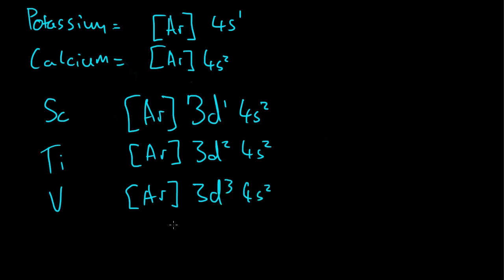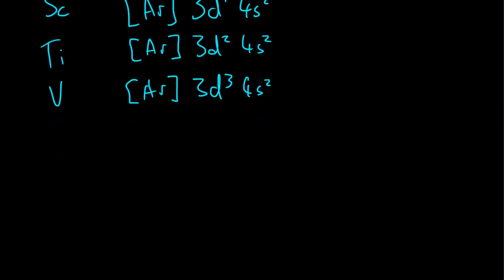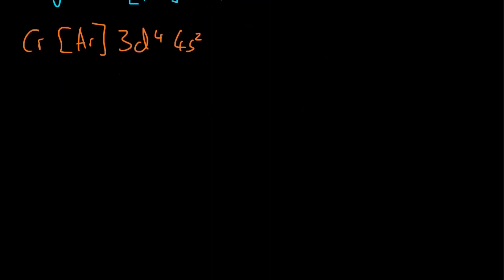Now, when it comes to the next element, chromium, you'd expect to have chromium Ar 3d4 4s2. You'd expect that, because we've added another electron to the 3d orbital. But something kind of awesome happens here. Let's just use an analogy to describe what's happening. At the moment, we have two orbitals. Let's draw them as people. We have orbital 3d.